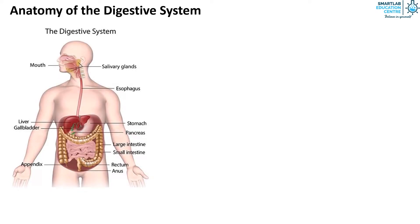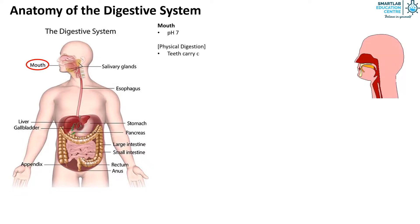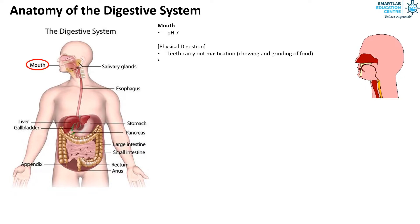First we have the mouth. The pH in the mouth is around pH 7. The physical digestion occurring in the mouth are as follows: the teeth carry out mastication, which is the chewing and grinding of food, and the tongue rolls food substances into a food bolus.